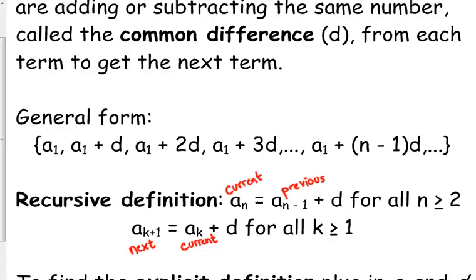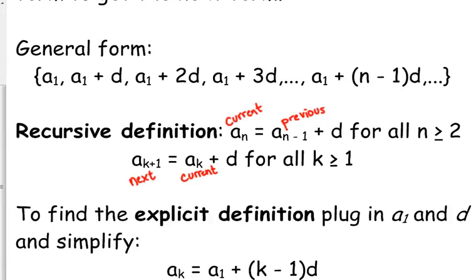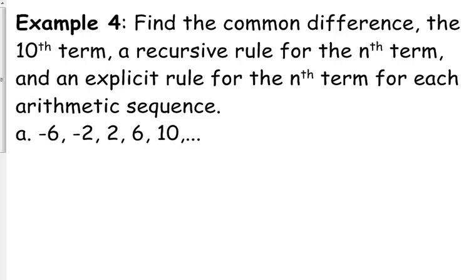Most of the time, though, you're going to deal with the explicit definition or formula because it's the most helpful. So this is your general form. This is on the formula sheet. They've got a sub n. They use n instead of k. a sub n is equal to a sub 1 plus n minus 1 times d. Let's use n's instead of k's, but it's the same thing. So you'll plug in the first term. You'll either know it or you'll be able to figure it out. You'll plug in the common difference, the d, and then you're just going to simplify the equation a little bit in order to use it. So let's look at that.